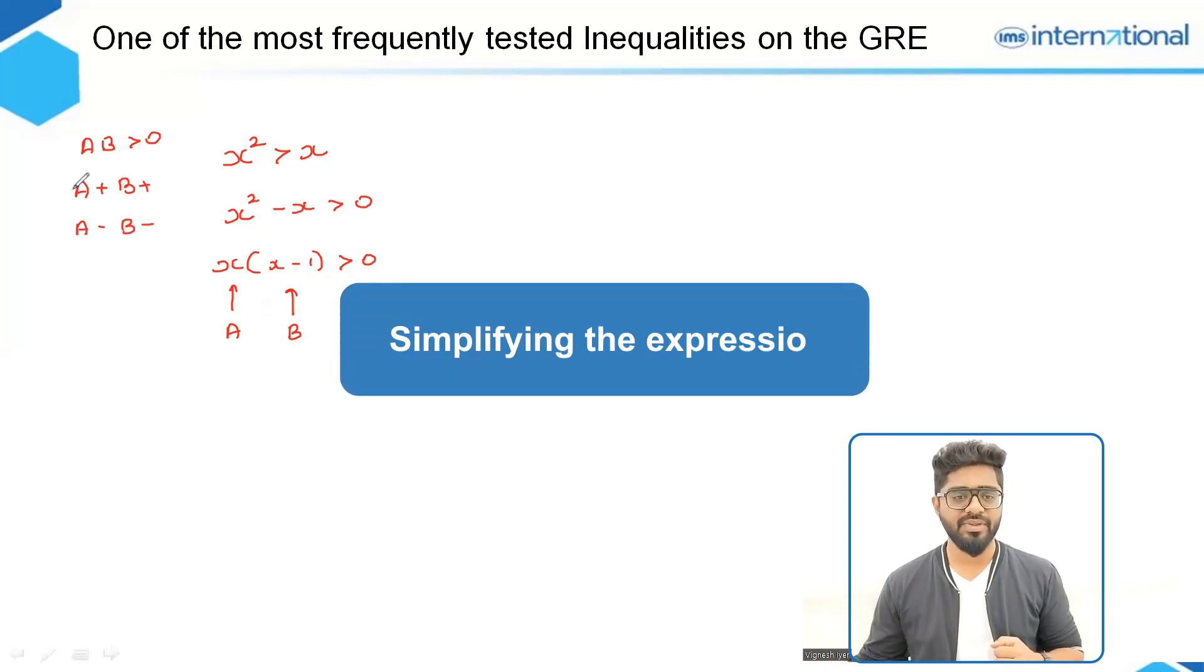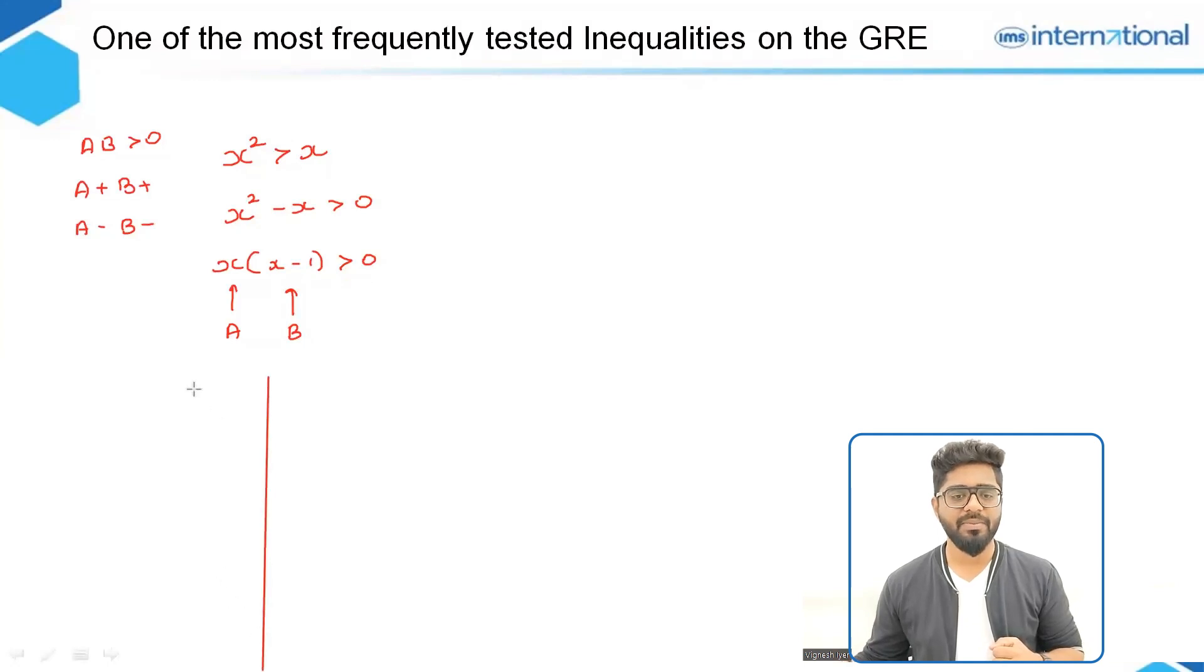So let us simplify this. Let's make two columns and consider both scenarios. On the left, let us say that A is positive, and if A is positive, then B has to be positive. Similarly, on the right, let's say A is negative, so B will also be negative. Now, what do we mean when A is positive and B is positive? Here the value of A is X and B is X minus 1.